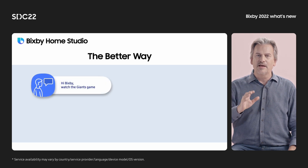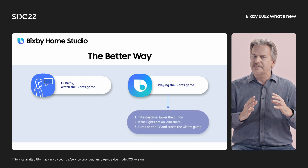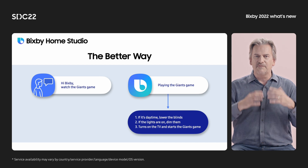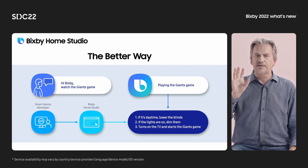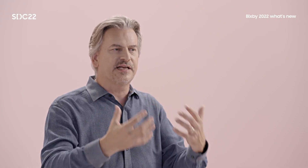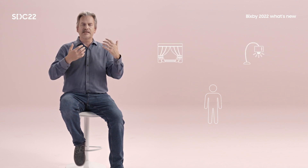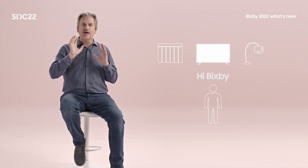Powered by Bixby Home Studio, I should be able to say, 'Hi Bixby, watch the Giants game,' and then inside Bixby, all this logic will say: if it's daytime, I'll lower the blinds; if the lights are on, I'll automatically dim them; and finally, I'll turn on the TV and start the Giants game. A smart device developer went into Bixby Home Studio and set up all the logic to make that happen. Once I connected my blinds, my lights, and my TV to SmartThings, I could just say 'Hi Bixby, watch the Giants game' — and it would lower the blinds, dim the lights, and start the Giants game on my TV.